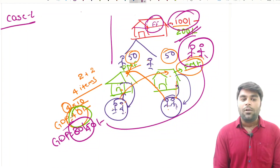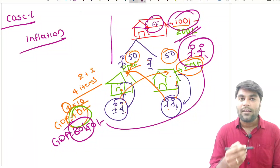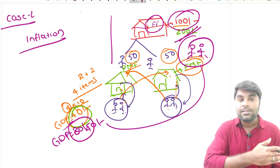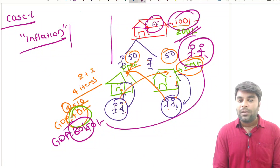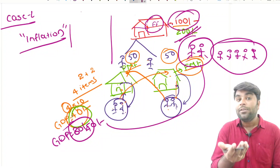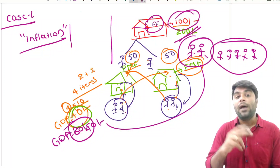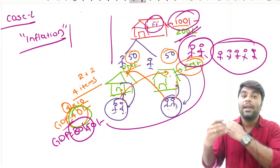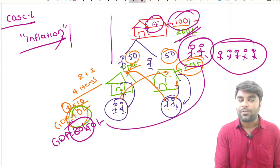Now let us understand case 2. You have already heard about the term inflation. In our previous class I explained how to calculate inflation — the percentage change in the price index of the current year compared to the previous year. If more and more people get money in their hands, they are going to demand more goods and services. If people demand more goods and services, definitely their prices are going to increase. When the prices of goods and services increase, we call it inflation.